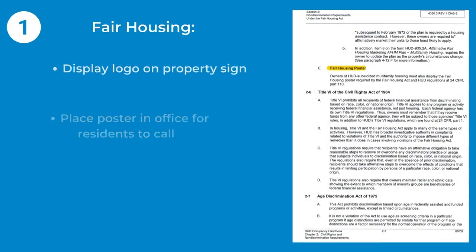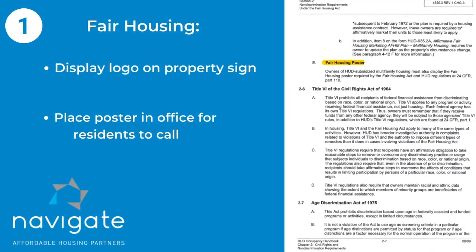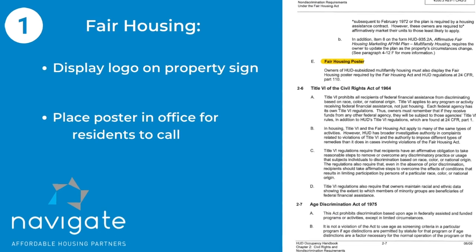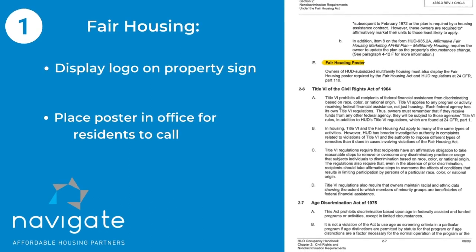The first one is going to be your Fair Housing sign. The Fair Housing logo has to be on your property sign. However, the Fair Housing poster needs to be in your office to let the residents know that if they have a Fair Housing complaint, they can come down to the office and take the Fair Housing complaint number off of the poster.